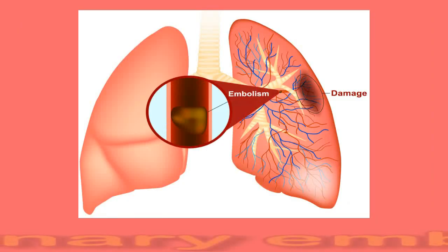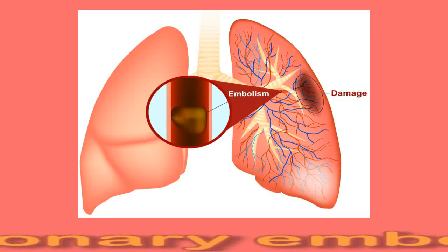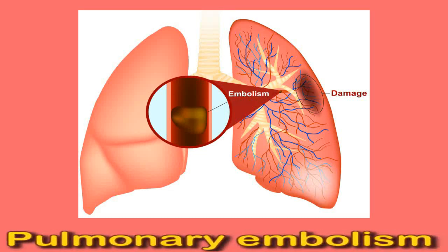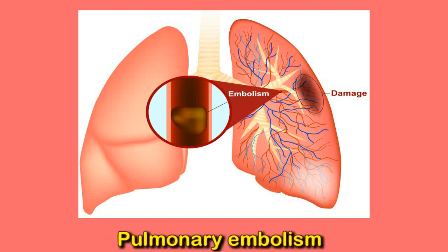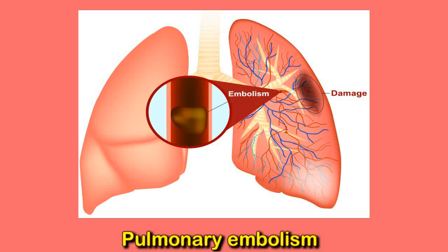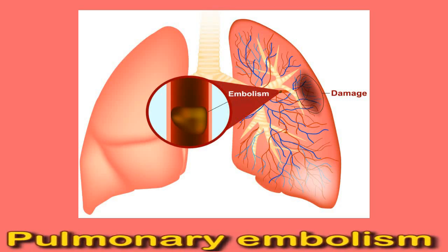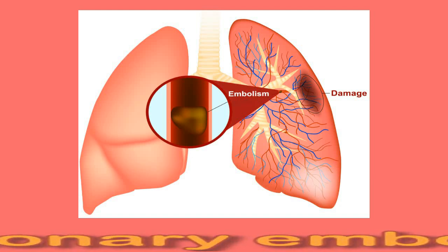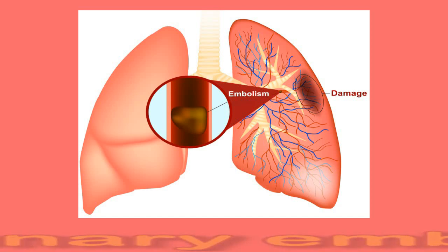Pulmonary embolism is a severe and life-threatening condition that occurs when a blood clot forms in an artery to one of the lungs, starving the lung tissue of oxygen-rich blood. It can cause pain in the chest or upper back. Other symptoms include pain, swelling, and redness in a leg, difficulty breathing, or coughing up blood.